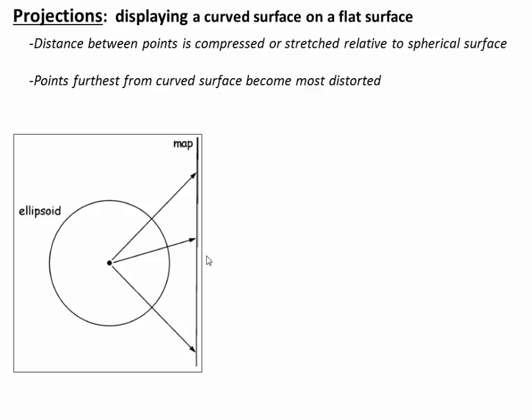A simple way to think about this: if this is Earth and you're trying to draw a map on a flat surface, you effectively have to unwrap this circular surface and spread it onto a flat surface. Mathematically, this is done with a projection. We can visualize that with a gnomonic projection — imagine a point of light inside the Earth, with rays going through the surface and intersecting a plane. A point on the surface gets projected to a point on the map.